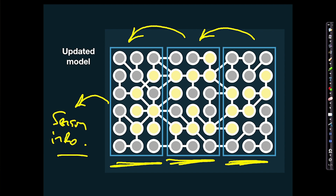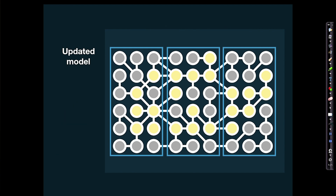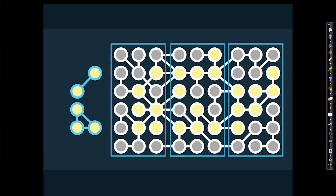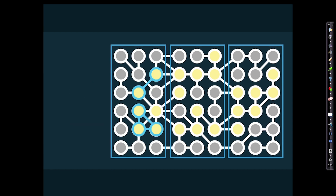How do we measure the success of this update? Simply by whether or not it correctly predicts the sensory information. In the updated model, with the same sensory information as before, we now get a match. The model has been updated and now correctly predicts sensory information, so there are no prediction errors passing up from lower to higher order.